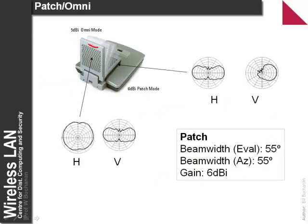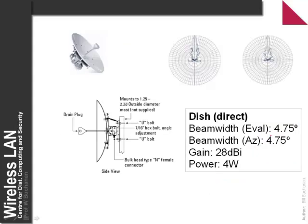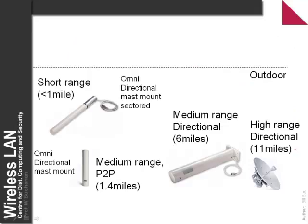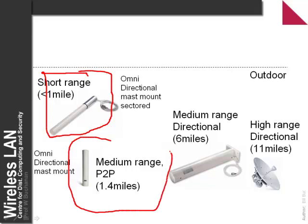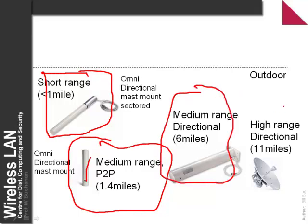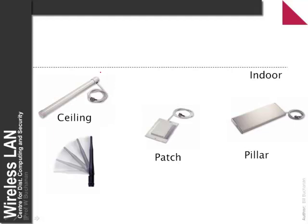We can also have integrated patch antennas, such as on an Aironet, giving good dBi and fairly good coverage in both directions. A dish antenna with 5-degree beam width gives 28 dBi, highly focused within 4 to 5 degrees. For outdoor use: mast-mounted or sectored antennas for shorter ranges, Yagis for medium-to-higher range, and dish antennas for up to 11 miles. Indoor options include ceiling mast, dipole, patch, and pillar antennas.